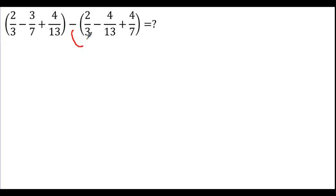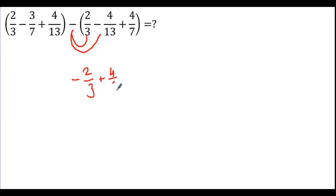I'm going to multiply minus by 2 over 3, so I'll get minus 2 over 3. Multiply minus by minus 4 over 3 — minus times minus is plus — so it is plus 4 over 13. And I have minus times plus 4 over 7, so it is minus 4 over 7.